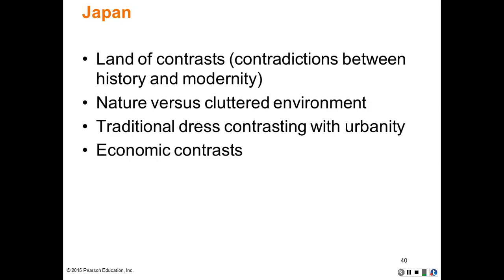Japan is a land of contrast with contradictions between history and modernity. There is nature versus a cluttered environment. Chinese culture embraces both the natural environment and the urban environment. There is traditional dress contrasting urban dress, and there are economic contrasts as well that we'll discuss later in our lectures.